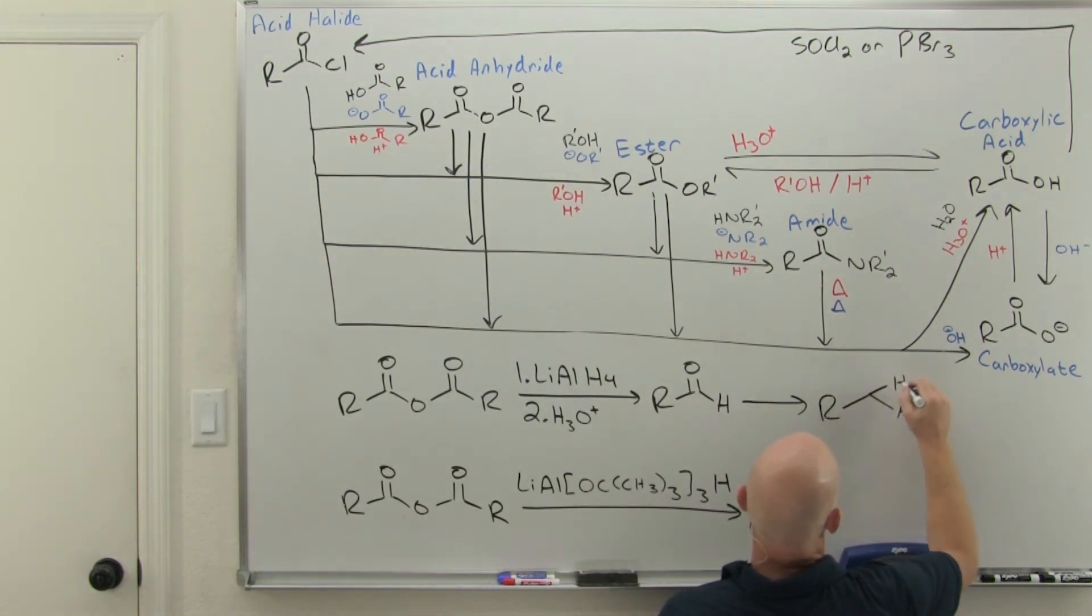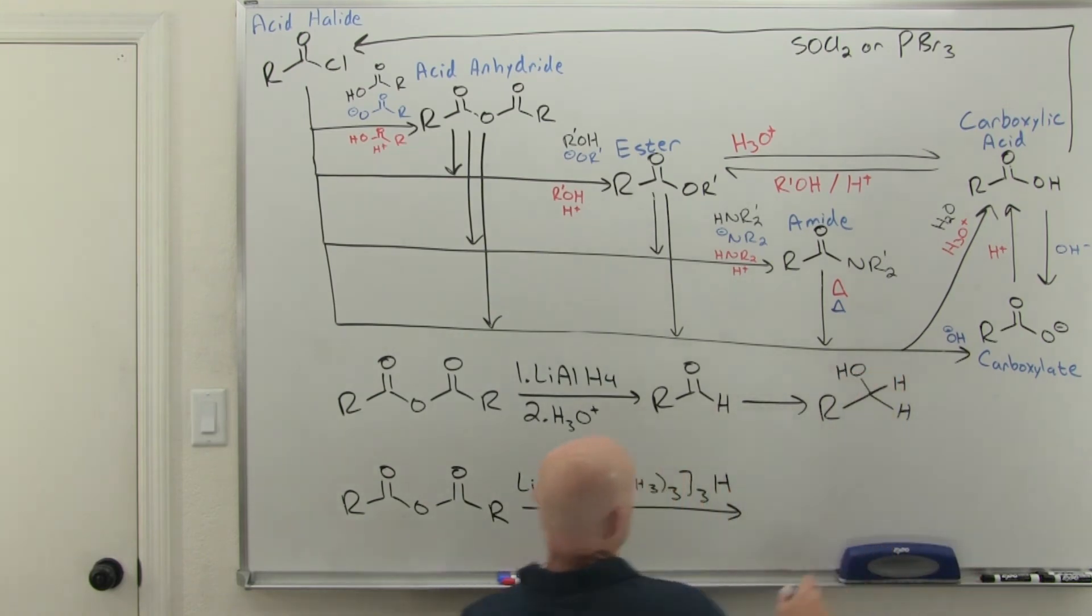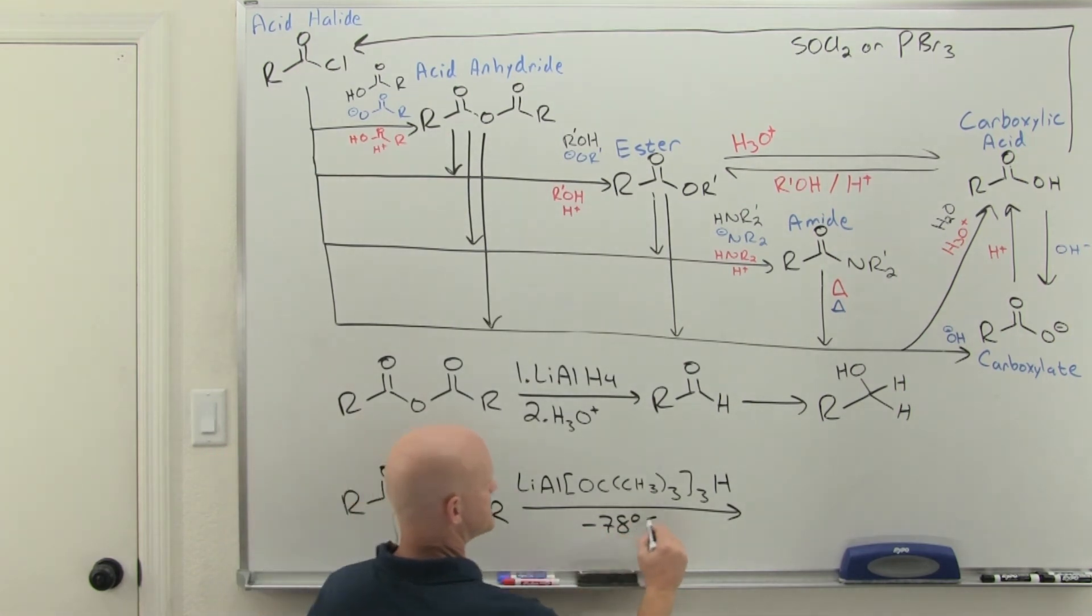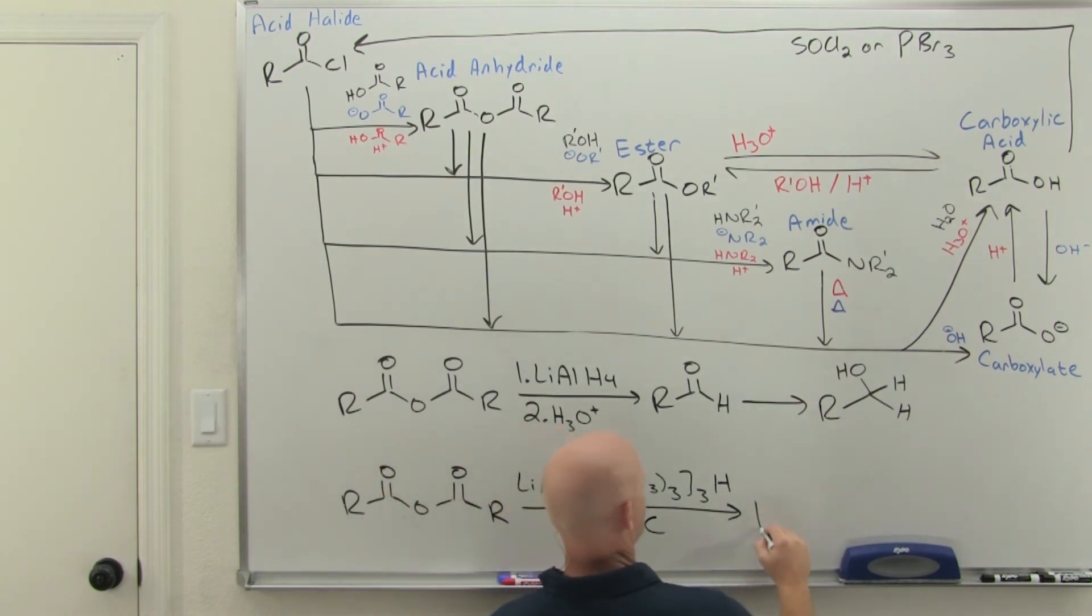To add a second H and give you the corresponding alcohol. Now if you want to stop at the aldehyde, you've got to use a special reducing agent here. Once again, this is our lithium tri-tert-butoxy aluminum hydride, and you've got to use it at low temperatures as well. And this is how you'll stop at the aldehyde.